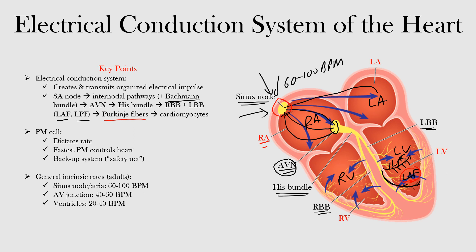If the SA node fails to fire an electrical impulse, there is a backup or safety net ready to take over. Every cell in the conduction system is capable of setting the pace of the heart; however, the intrinsic rate of each cell is slower than those cells that precede it. In other words, the sinus node has the fastest pacing activity, then atrial cells, then the AV node, and so forth.